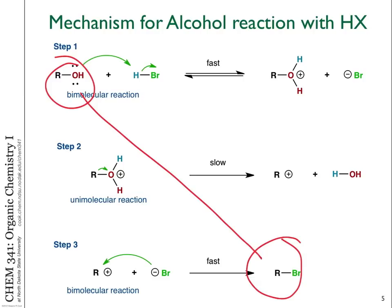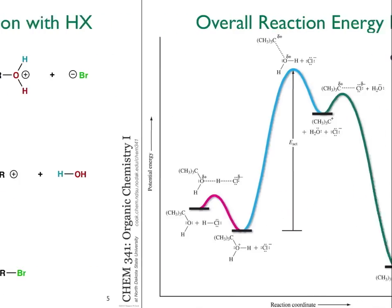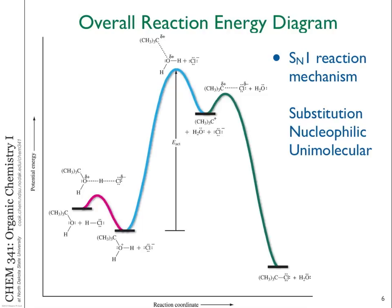Thinking about these three steps in the overall process going from the starting material — the alcohol — to the product, the bromide, we can look at the energetics all on one reaction energy profile. The potential energy is listed on the left, and the x-coordinate is the reaction coordinate, describing how the structure changes from starting material to products. You can see indicated on this diagram several areas where we have transition states, where we have intermediates, and where we have products.